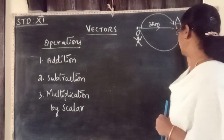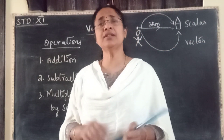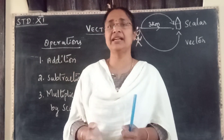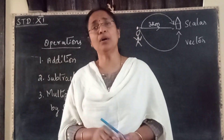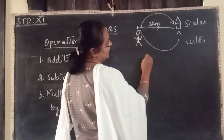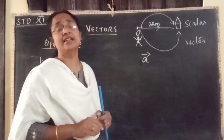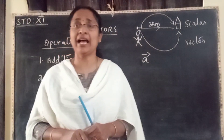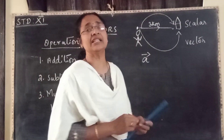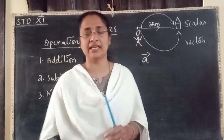So a vector is a quantity which has both magnitude as well as direction, whereas in scalar we have only magnitude. This is a very simple concept we have already learnt. We know how to represent the vectors also — using bars, and if writing a vector along with the direction, an arrow symbol.